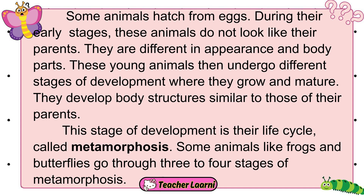These animals do not look like their parents. They are different in appearance and body parts. These young animals then undergo different stages of development where they grow and mature. They develop body structures similar to those of their parents. This stage of development is their life cycle, called metamorphosis. Some animals like frogs and butterflies go through three to four stages of metamorphosis.